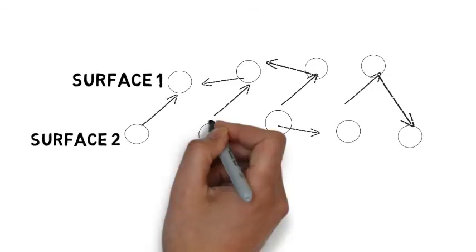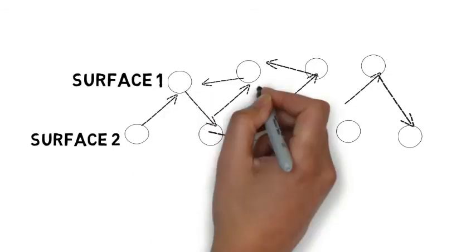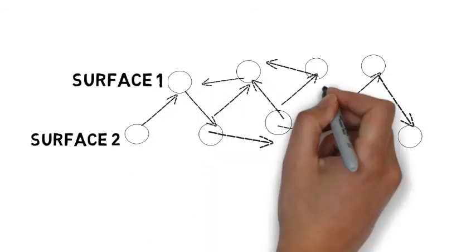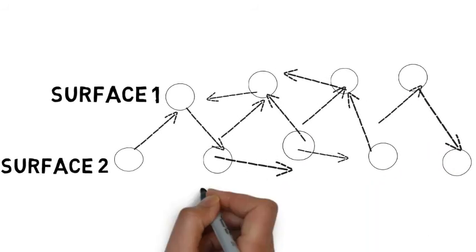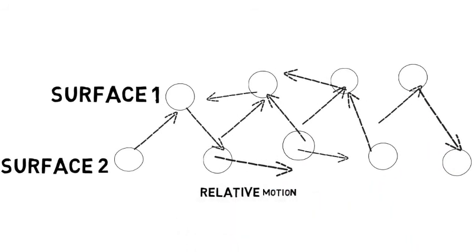Now the interaction between these molecules results in a typical type of friction and that friction will oppose the flow of the fluid.